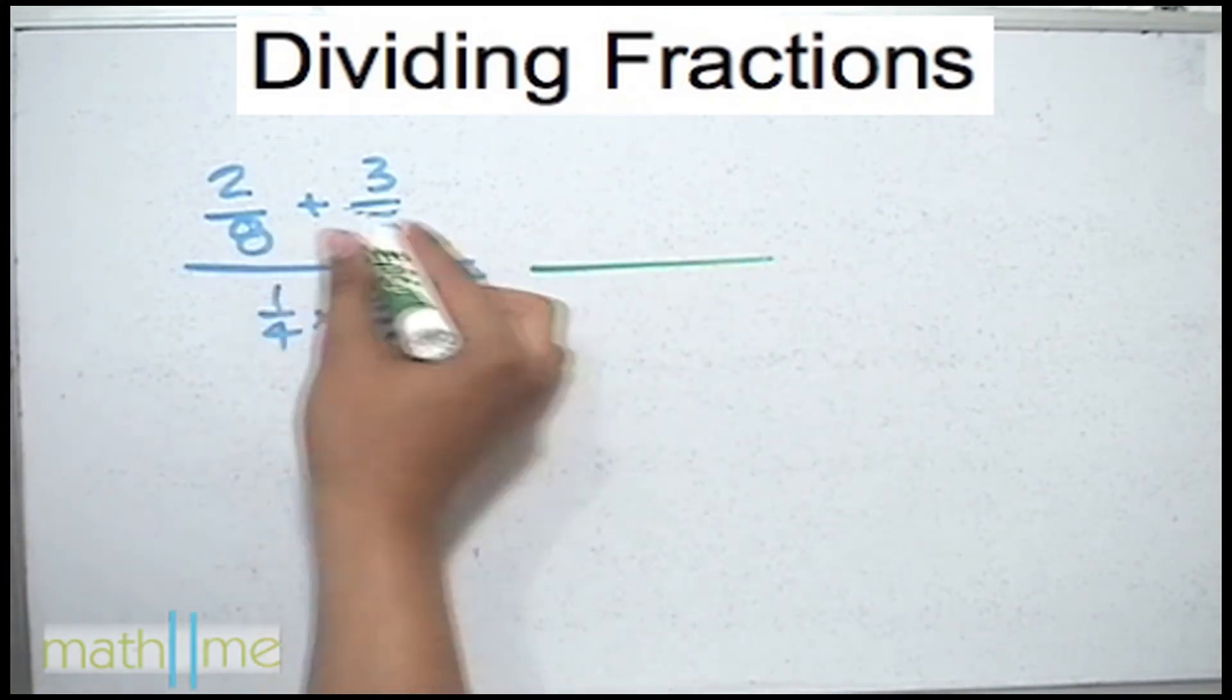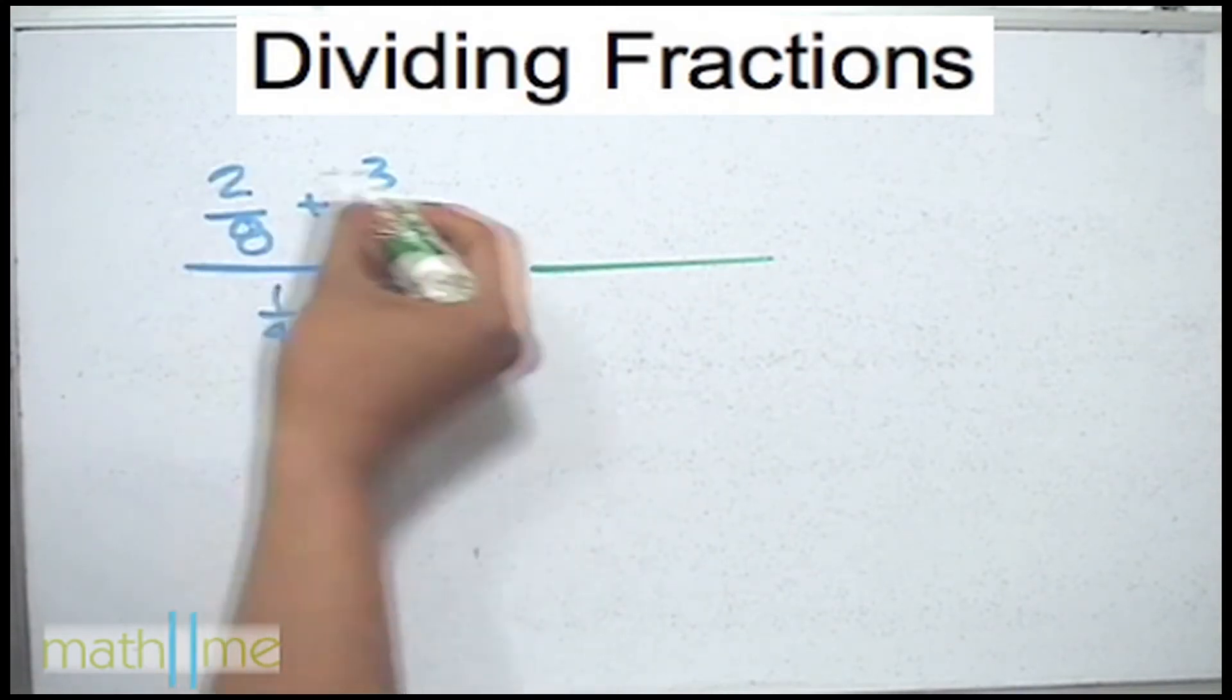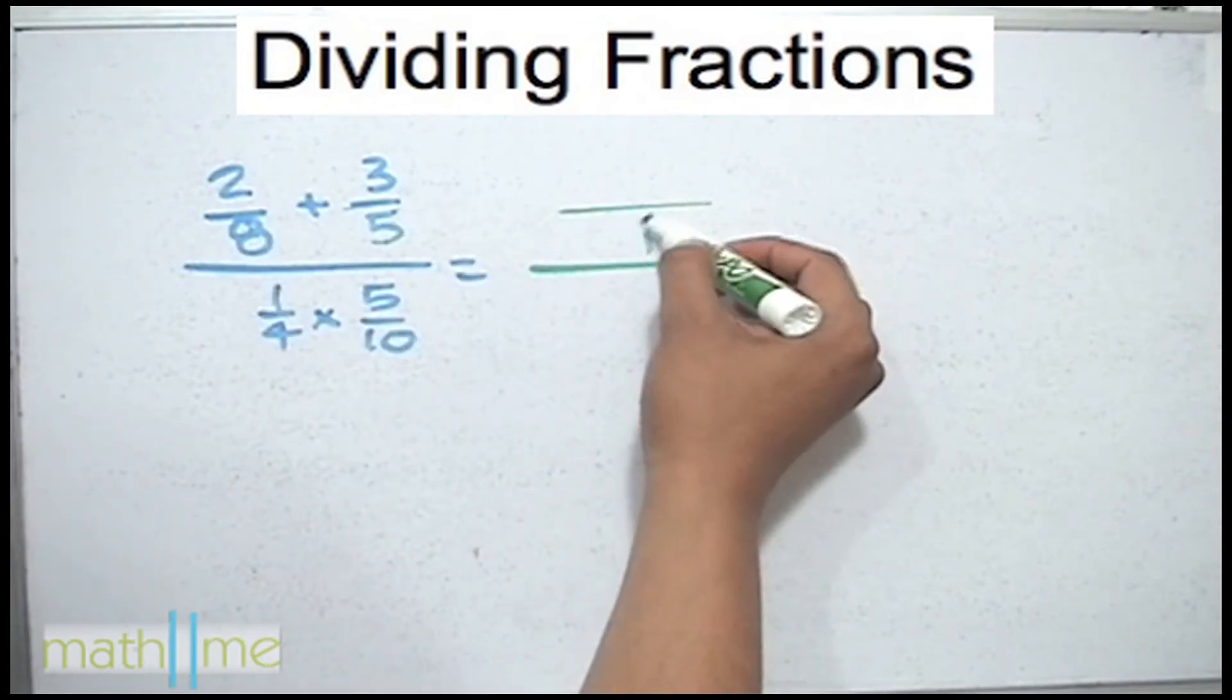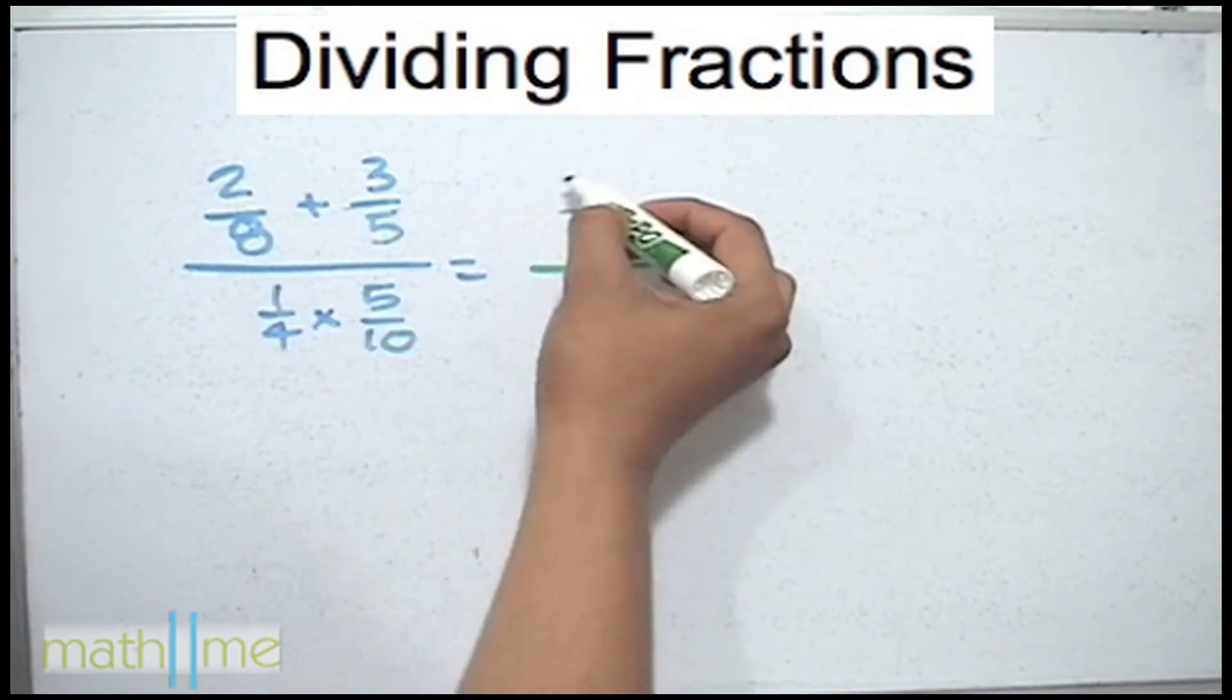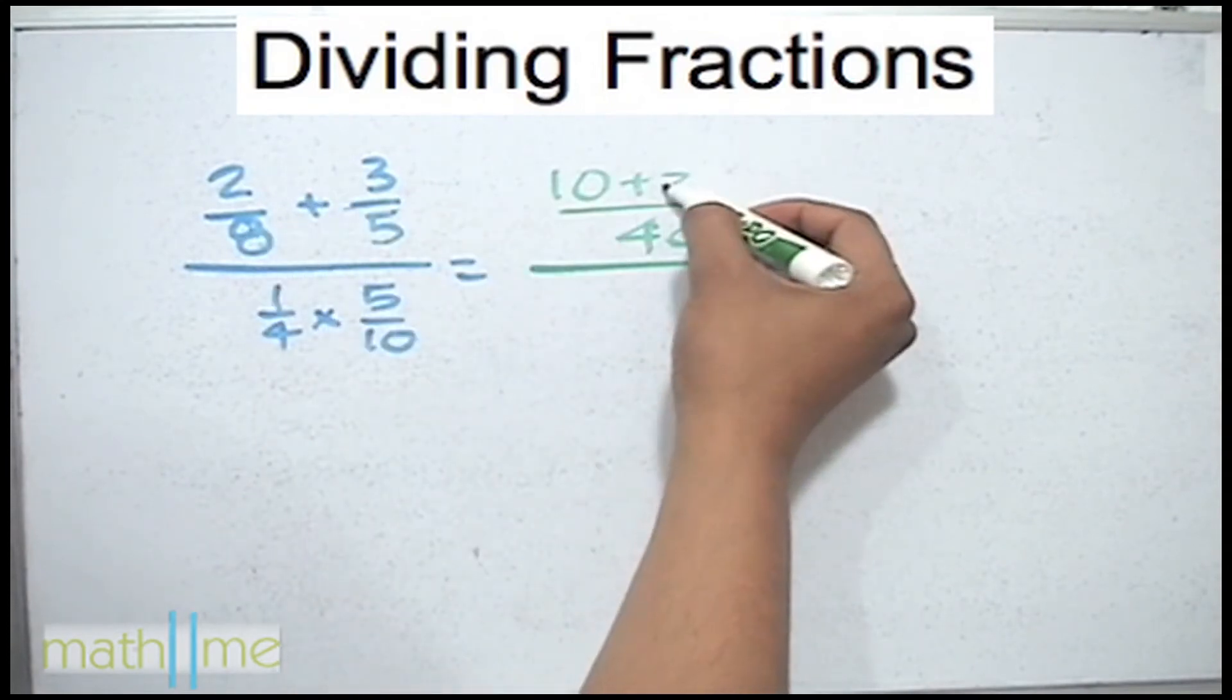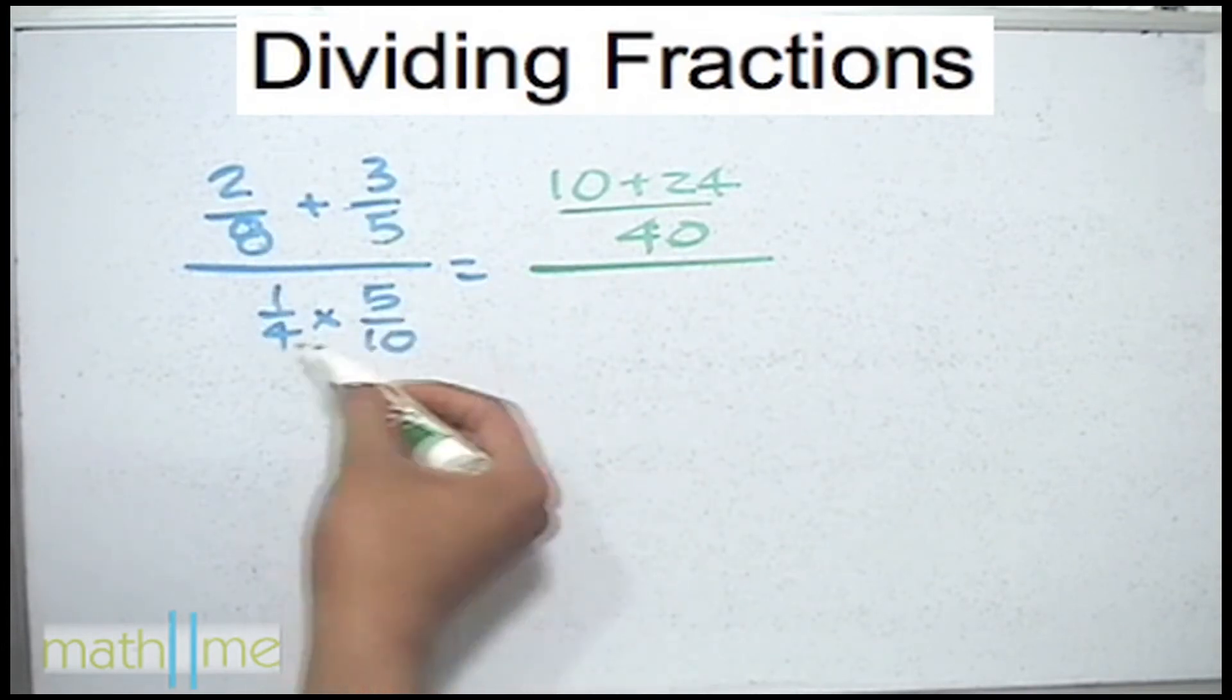It is an addition with different denominators. As there are two we can use the cross method for addition. 5 times 8 is 40 then 5 times 2 is 10. As it is addition we put plus here. 8 times 3 is 24. Well we did the top part.